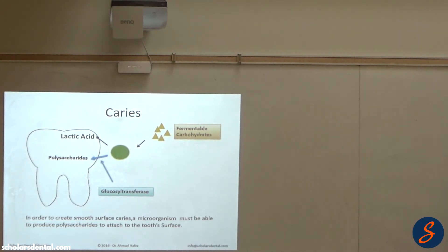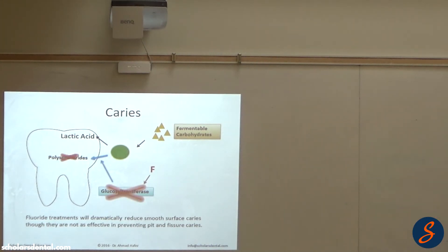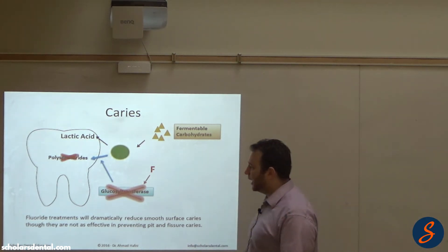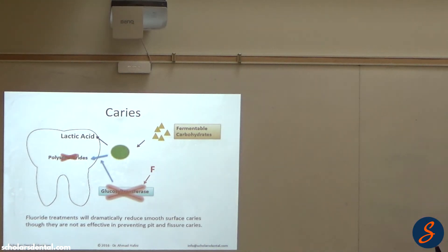So when we give fluoride, one of the other things that fluoride does, other than making fluoroapatite, is it actually blocks glucosyltransferase. And that prevents S-mutans from making its polysaccharides.